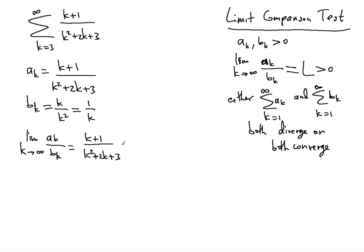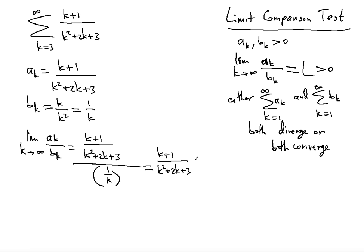And it will be divided by b_k, which is 1/k. So we're going to have (k+1) over (k²+2k+3) times k.